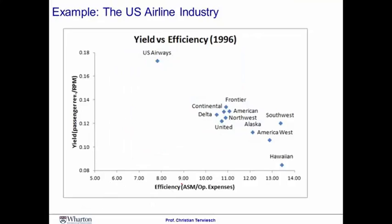Let's look at a specific example using data from the US airline industry. On the x-axis is the efficiency of carriers, measured by the ratio of travel miles provided relative to operating expenses. On the y-axis is the yield of the airline — the ratio of miles of travel service provided relative to revenue. We see a line capturing most of the big airlines in a roughly linear pattern. The interesting outlier is Southwest Airlines, which achieved much higher productivity compared to the big legacy carriers and thereby shifted the frontier, largely through clever labor productivity — something we'll analyze later in this course.